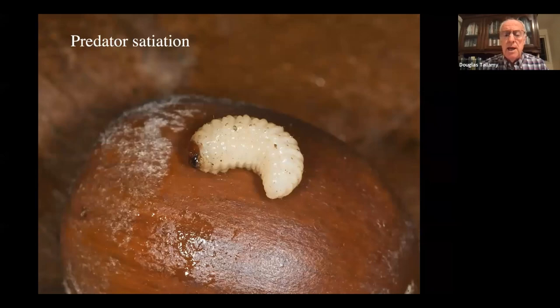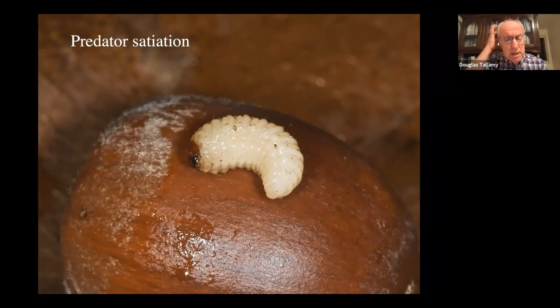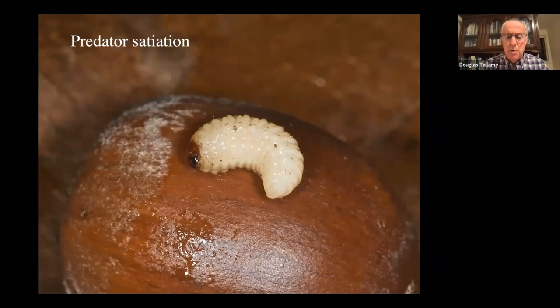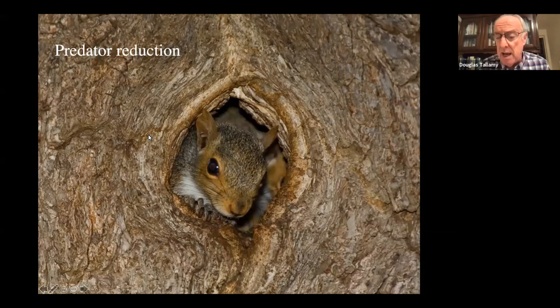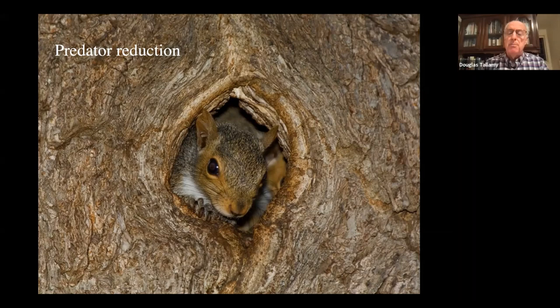If oaks made acorns at the same density every year, the acorn weevil population and squirrels would stabilize around that number and eat almost every one. But if oaks make a huge crop one year, it causes a population explosion of acorn eaters. The following year there are almost no acorns, and those predator populations crash. With very few acorn predators around, the next mast year easily swamps the predator population — that irregular production is what allows many acorns to escape predation.